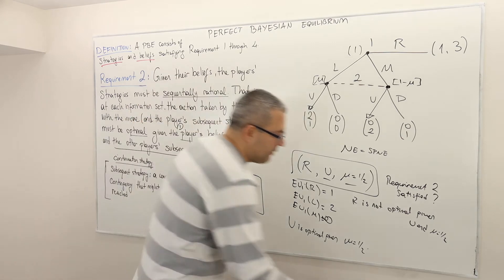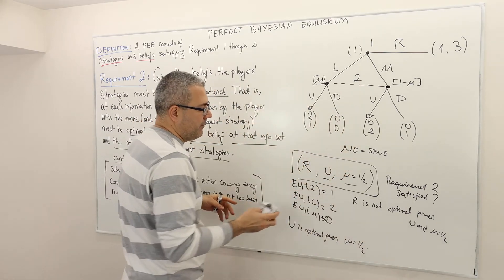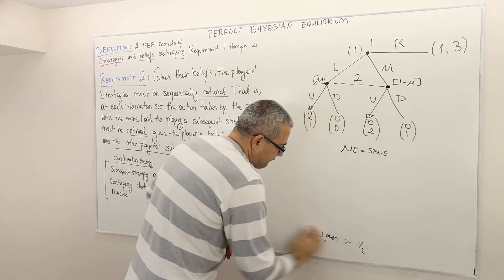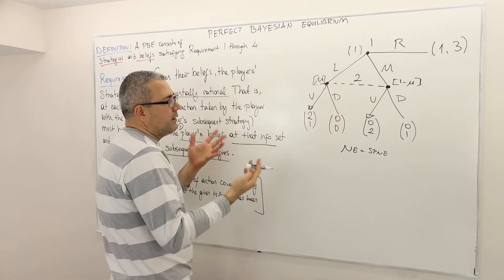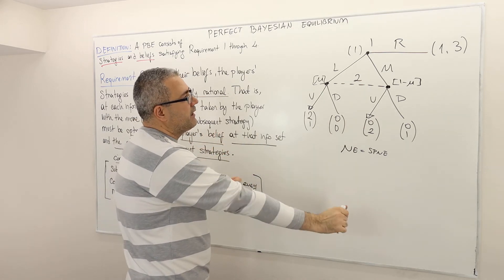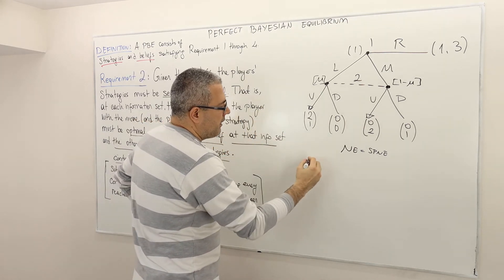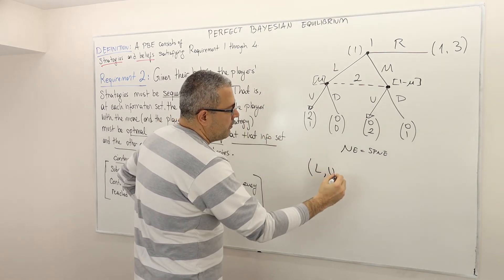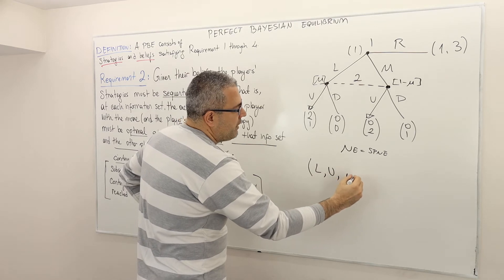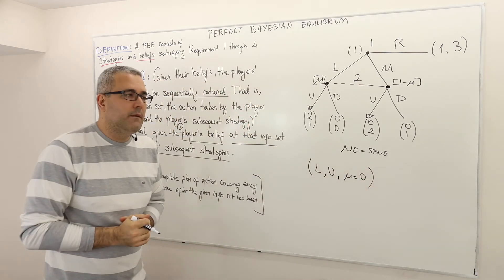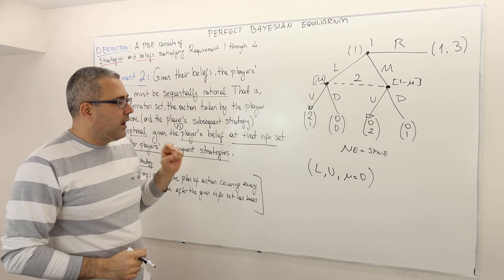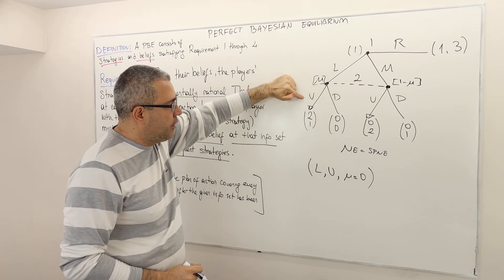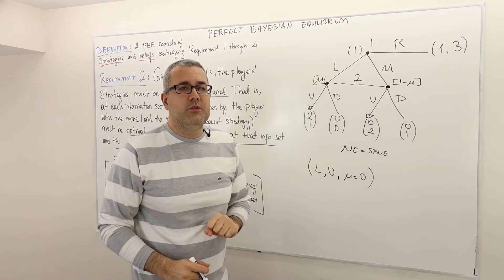Let me pick another example for exactly the same game, just changing the strategies and the belief system. Here, player one plays L, player two plays U, and mu equals zero.